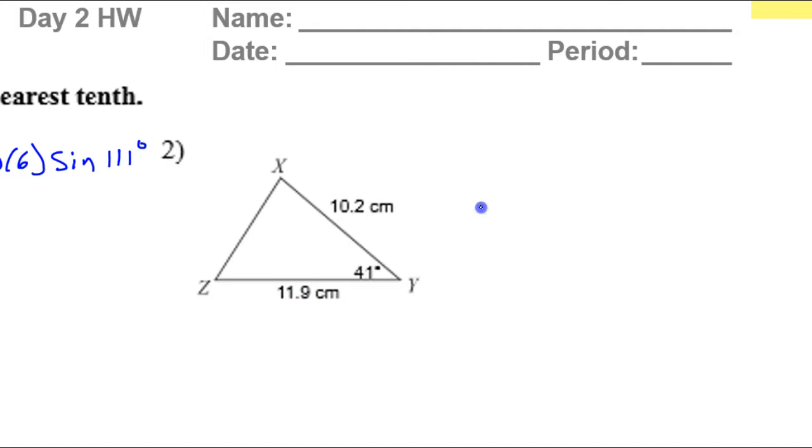Similarly, for problem number two, the area should equal one-half 11.9 times 10.2, and then times the sine of 41. So that is going to be 39.8 square centimeters.